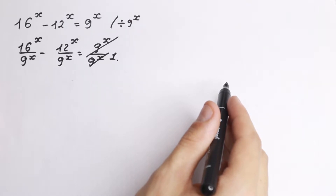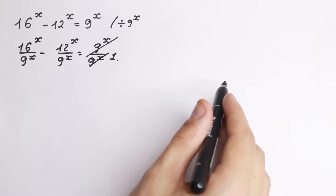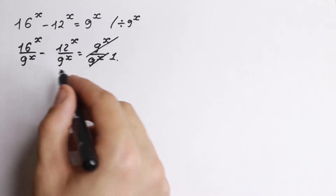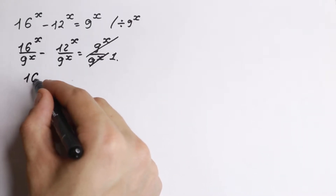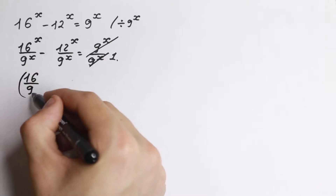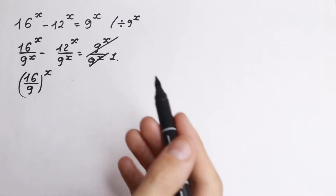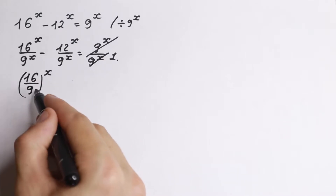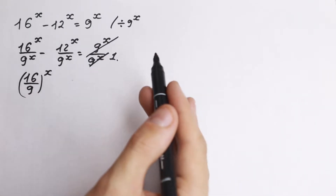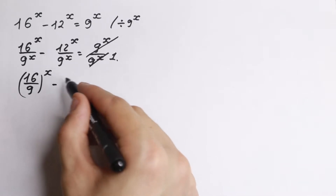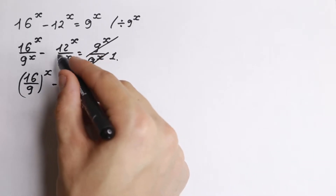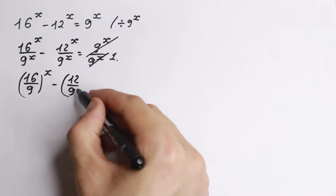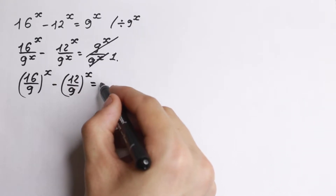What we're going to do next — we need to know a really good rule: if we have different bases but the same exponent, we can write it in a fraction way. So 16 over 9, all to the power x. This rule works in reverse as well. So we get 16 over 9 to the x, minus 12 over 9 to the x, equal to 1.